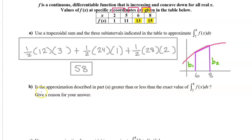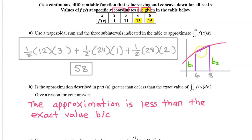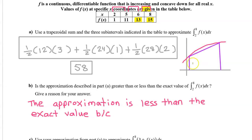Part B: Is the approximation described in Part A greater than or less than the exact value of the integral of f of x from 2 to 8? Give a reason for your answer. Looking at our sketch, the approximation is less than the actual area under the curve — the trapezoid is leaving out some area. But what is the justification?